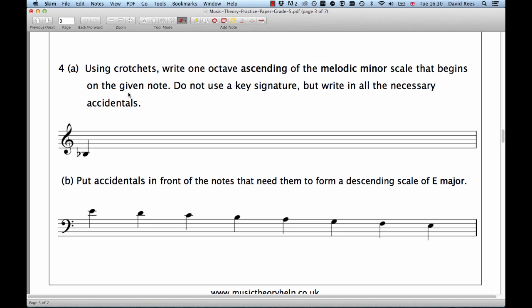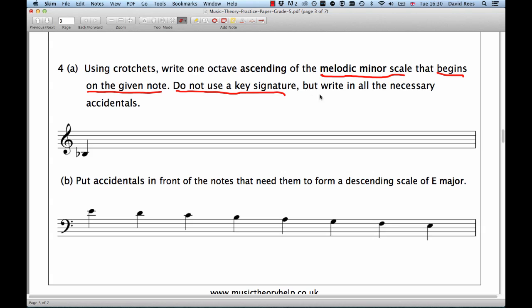Question 4 says, using crotchets, write one octave ascending of the melodic minor scale that begins on the given note. Do not use a key signature, but write in all the necessary accidentals.